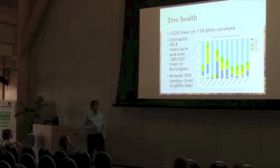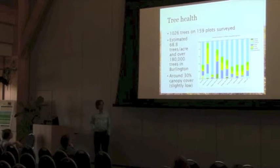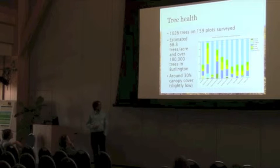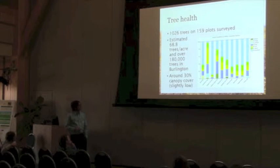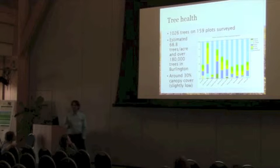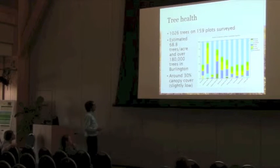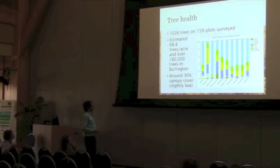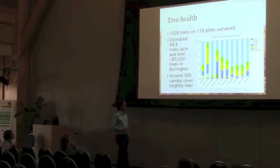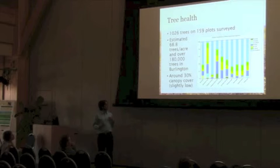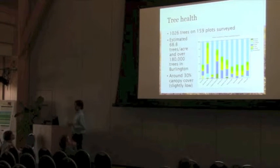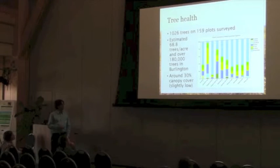We get about 68 trees per acre and over 180,000 trees estimated in Burlington. These numbers might actually be a bit low as we've had trouble getting to some more remote plots. We have maybe around 30% canopy cover. We get estimates of forest health — buckthorn, an invasive species, is doing poorly, which is great. Norway maple, also invasive, is doing really well. But we also get a picture of important native species like white pine, red oak, and sugar maple, which are generally doing well but with some variation to consider for forest management.